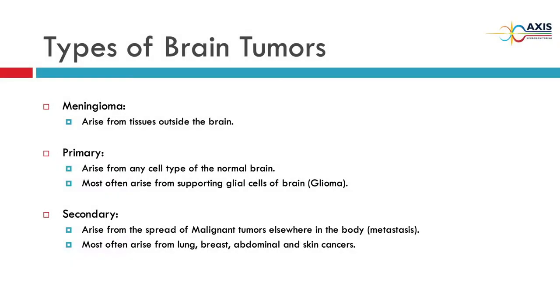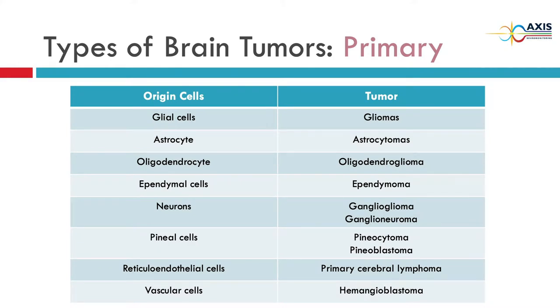There are different types of brain tumors depending on the origin of the tumor. Tumors originating from the meninges are meningiomas. Primary tumors arising from normal brain tissue — glial cells — are known as gliomas. Metastatic tumors are secondary and can arise from anywhere: most often lungs, breast, abdominal, skin, or bone cancer. By cell of origin: glial cell → glioma; astrocyte → astrocytoma; oligodendrocyte → oligodendroglioma; ependymal cell → ependymoma; neurons → ganglioglioma and ganglioneuroma; pineal cells → pineocytoma and pineoblastoma; reticuloendothelial cells → primary cerebral lymphoma; vascular cells → hemangioblastoma.